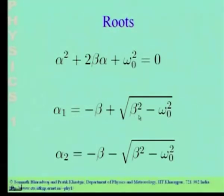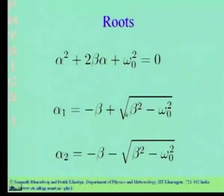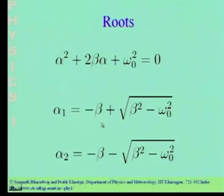In the last class we considered the situation where beta is less than omega-naught — this is the under-damped oscillator. The term inside the square root is negative, so the roots are complex. The imaginary part gives rise to oscillations, and the real part causes the oscillations to decay with time.